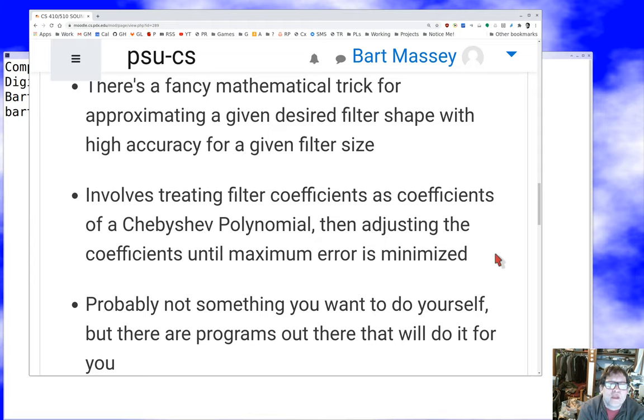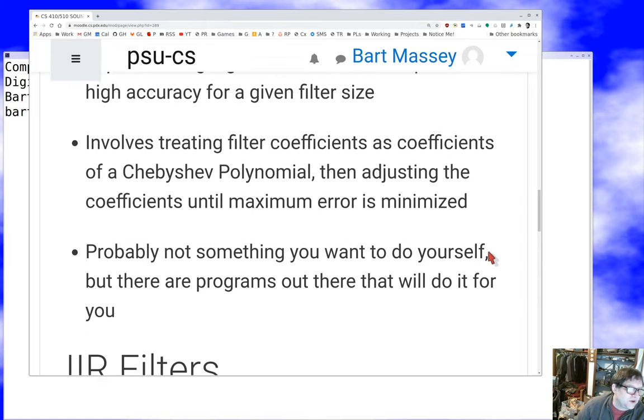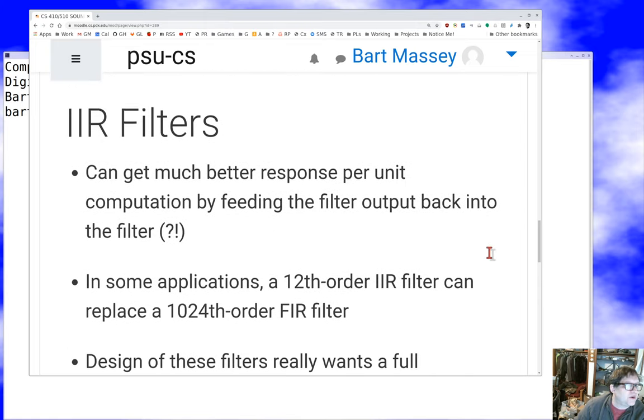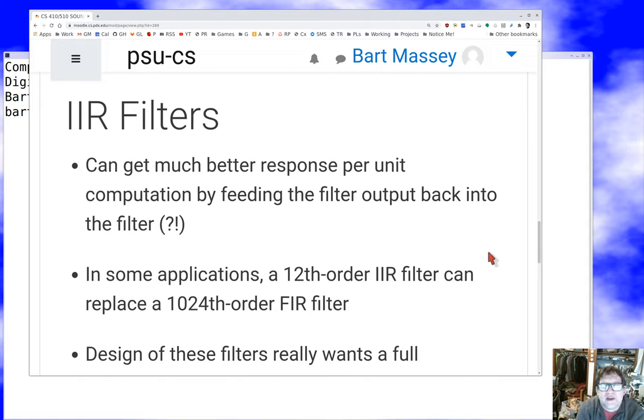Implementing this is very hard to do yourself, but fortunately there are library routines. For example, SciPy has a library routine that you can feed a specification of what filter you want and ask it to do the Parks-McClellan and Remez Exchange thing, and it will produce a minimax optimal filter or tell you that it's finding it too hard and it can't meet your specification. If you're looking for efficient filters, that's one good way to do it with FIR, but a better way sometimes to get an efficient filter is to go to infinite impulse response filters.